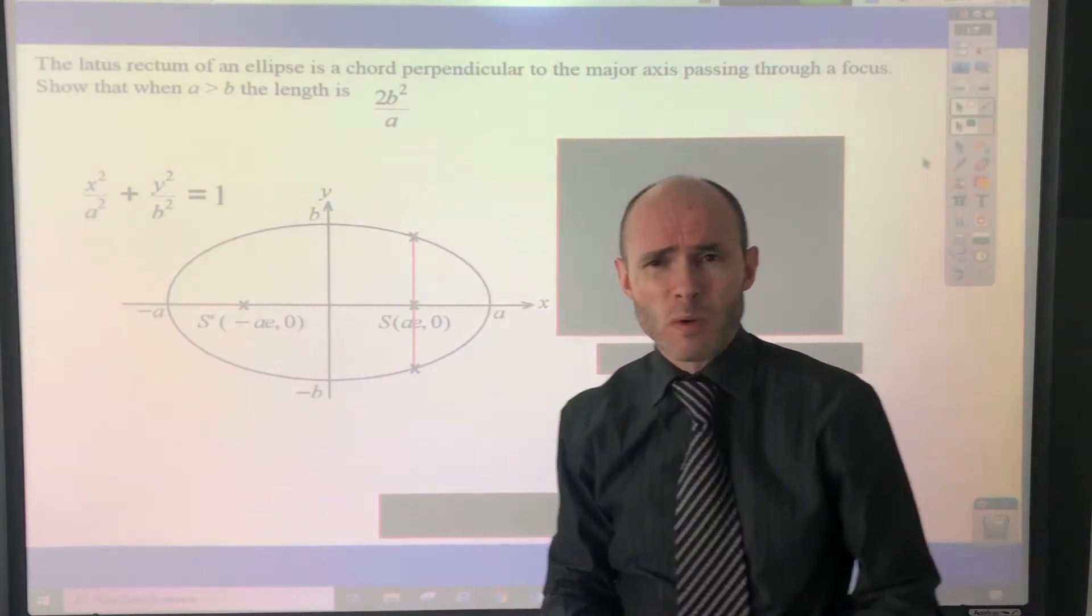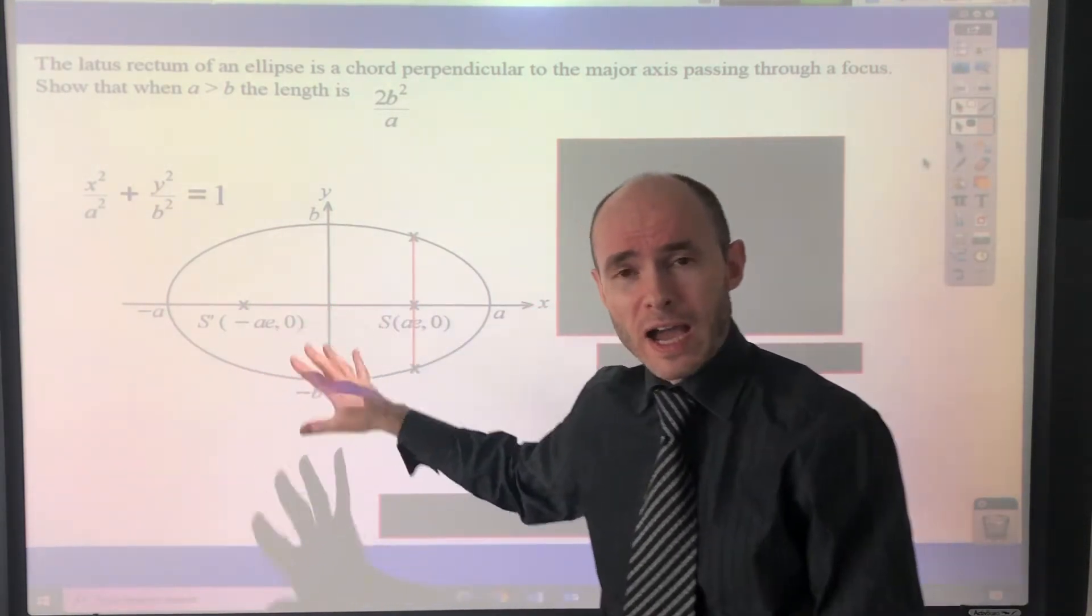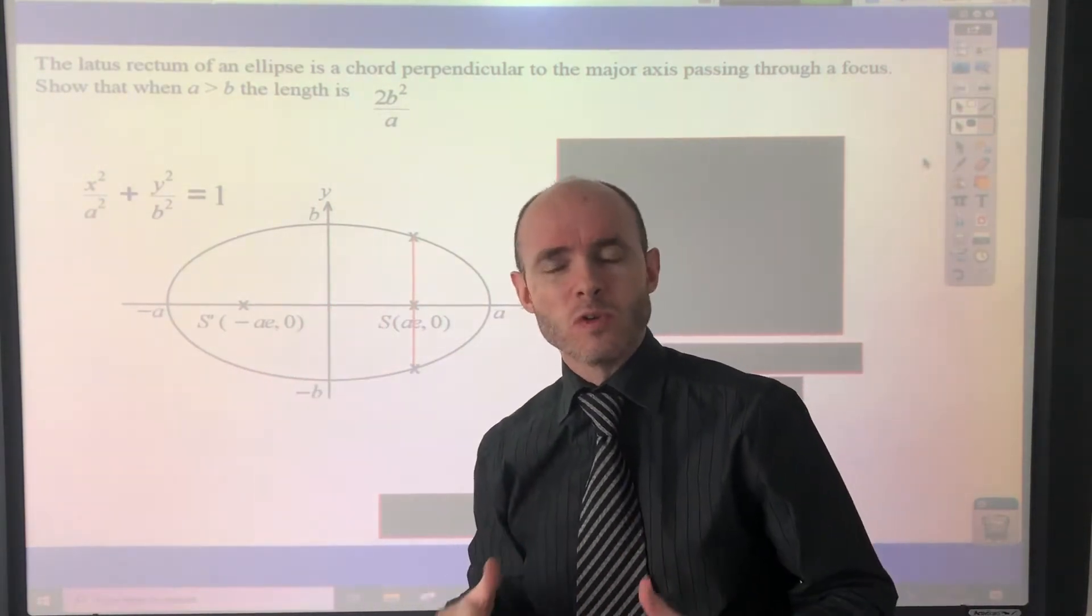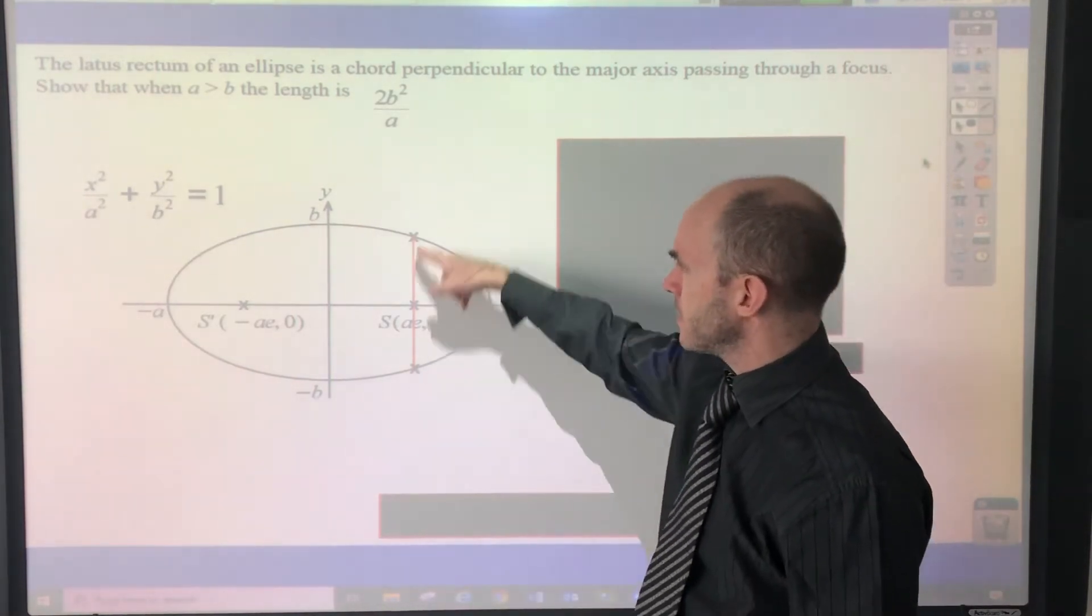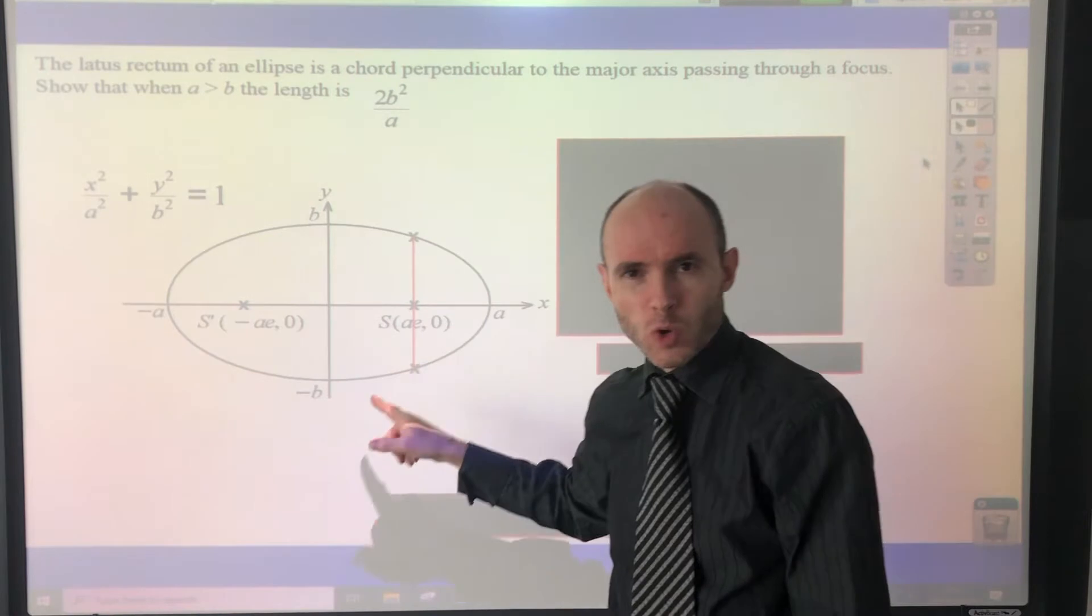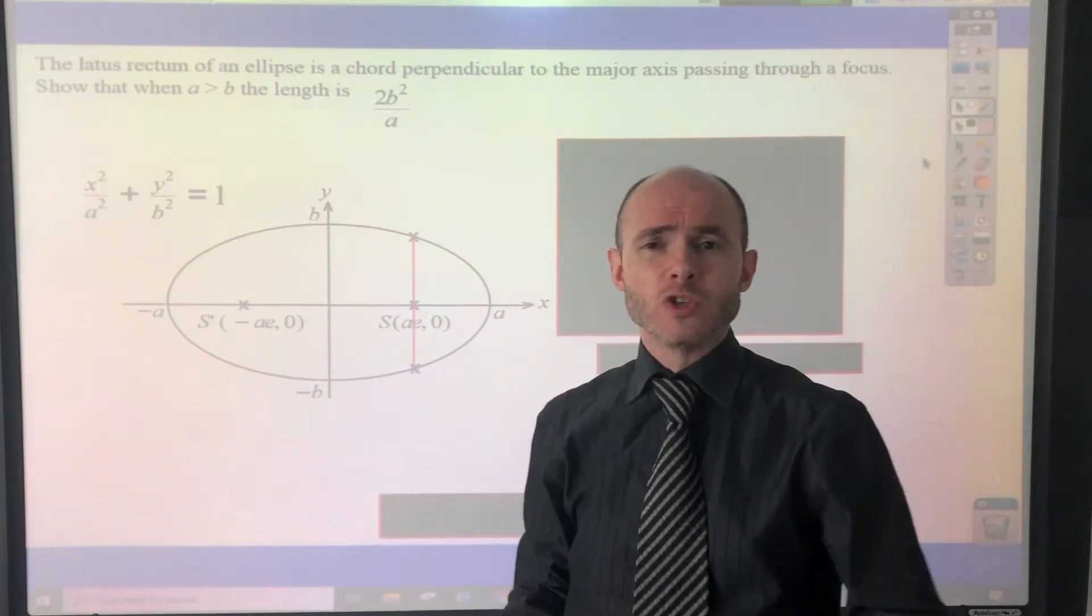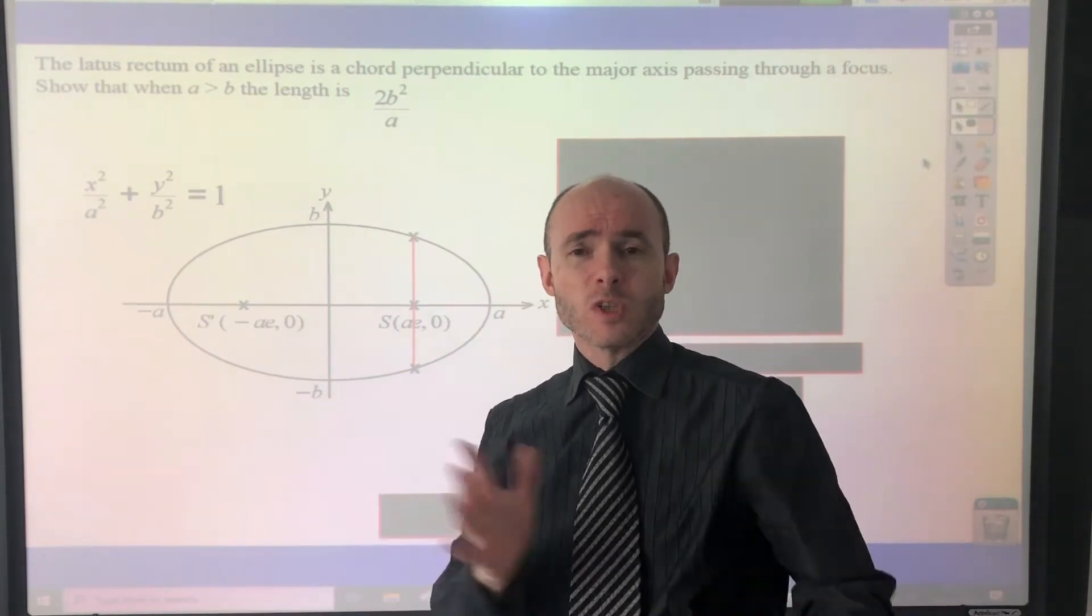Now just to help you out with that, I've got a diagram. A diagram is always essential, I think. I find them really useful to be able to understand exactly what is going on. This is our lattice rectum there. It's a chord, remember a chord is a straight line joining one part of a curve to another.